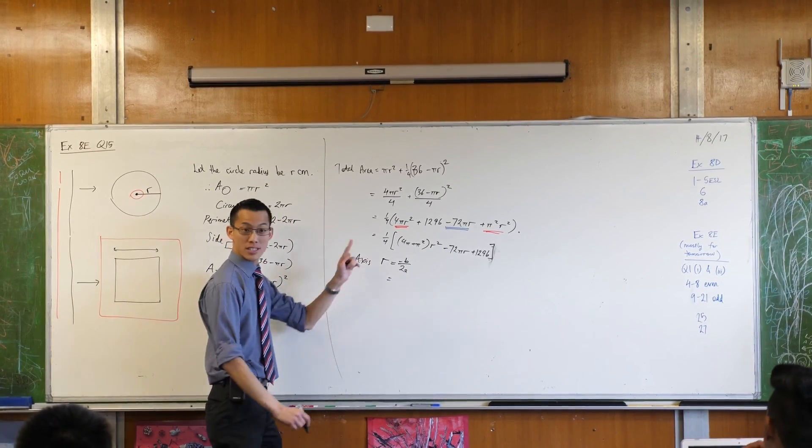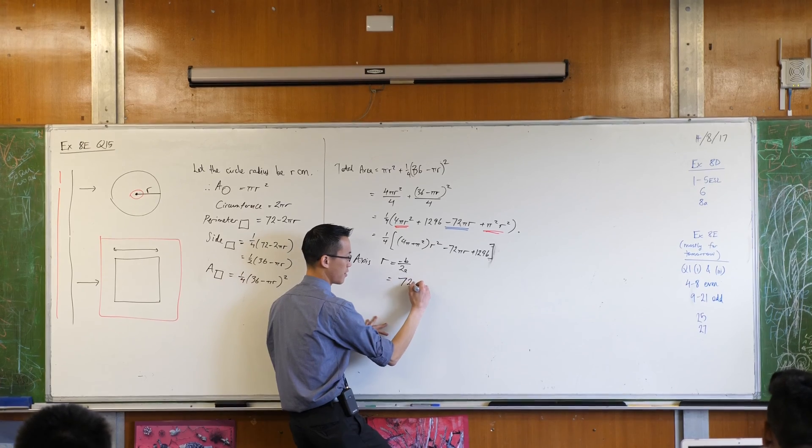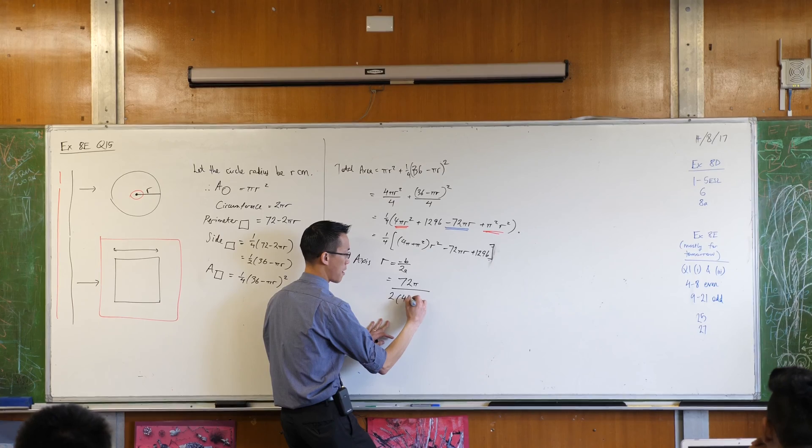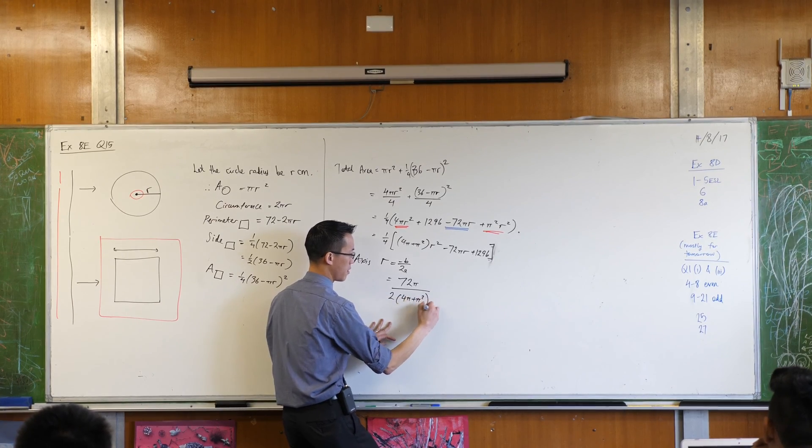Minus b, 72 pi, it's a double negative, all divided by 2 lots of this guy, 4 pi plus pi squared.